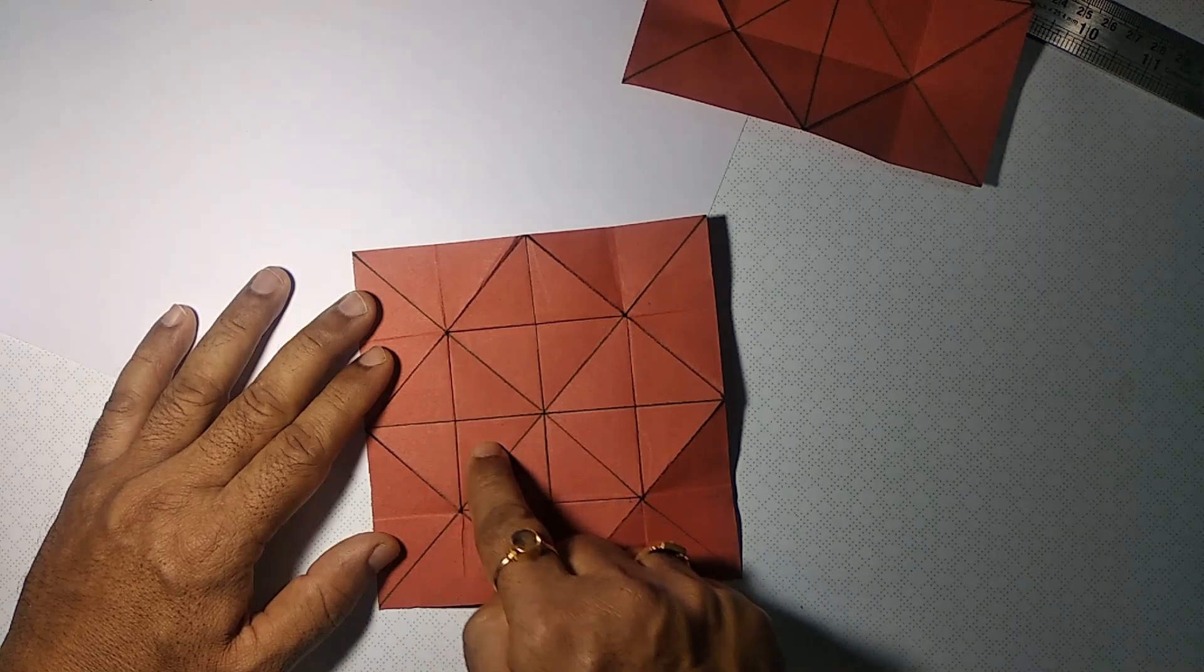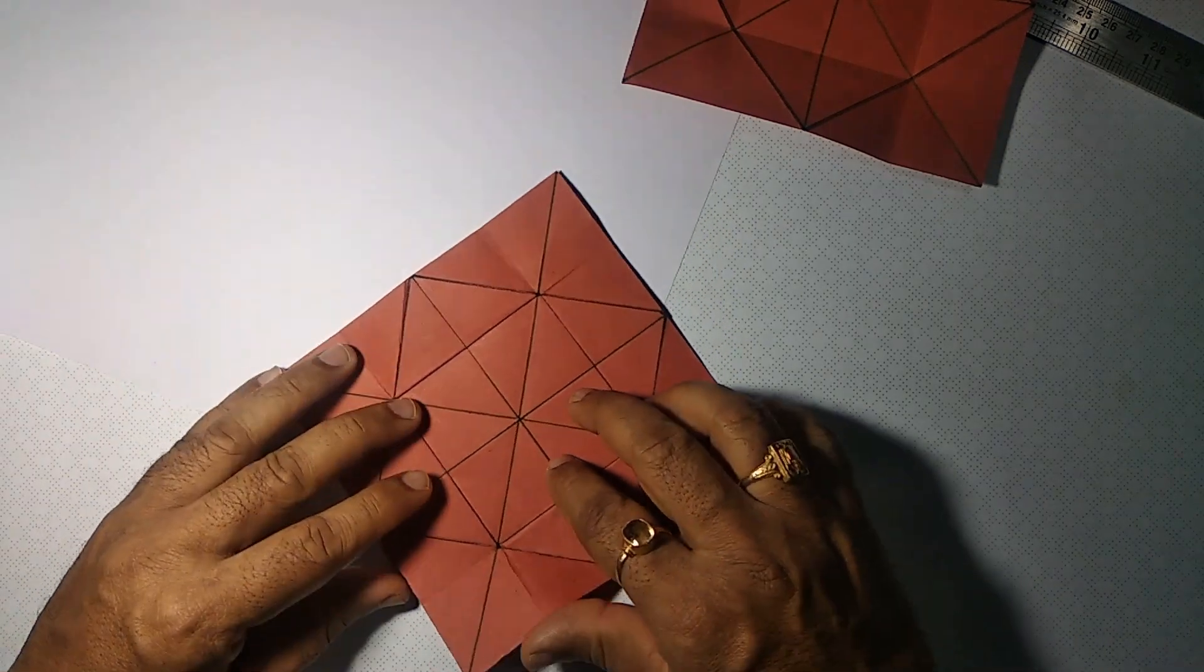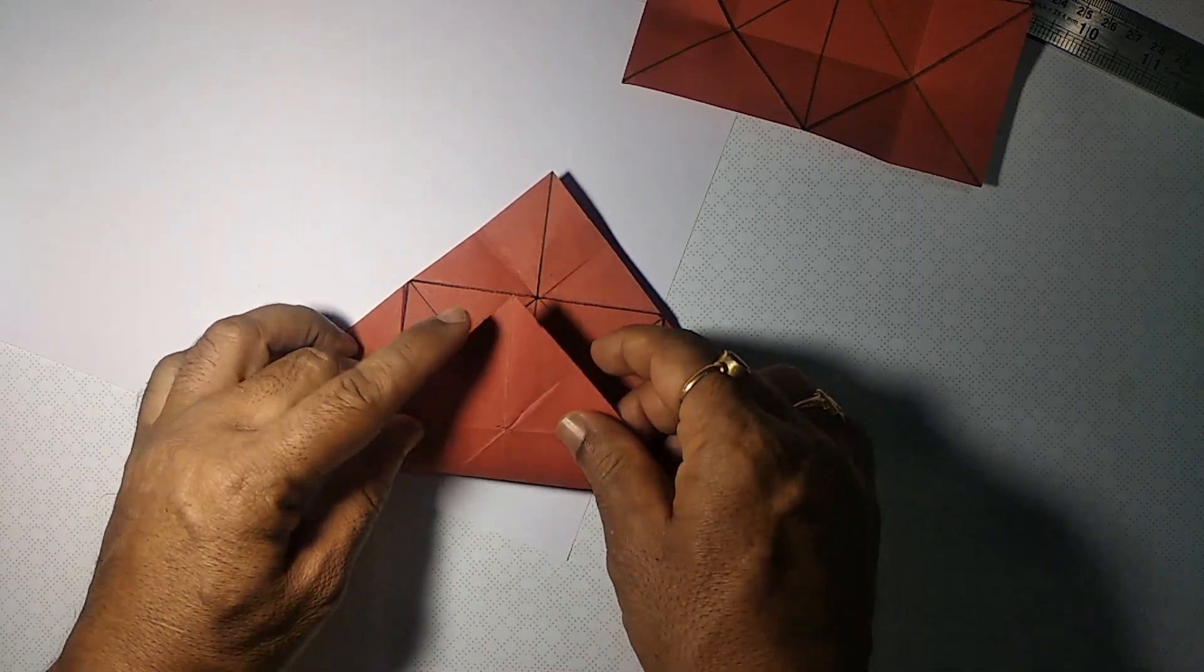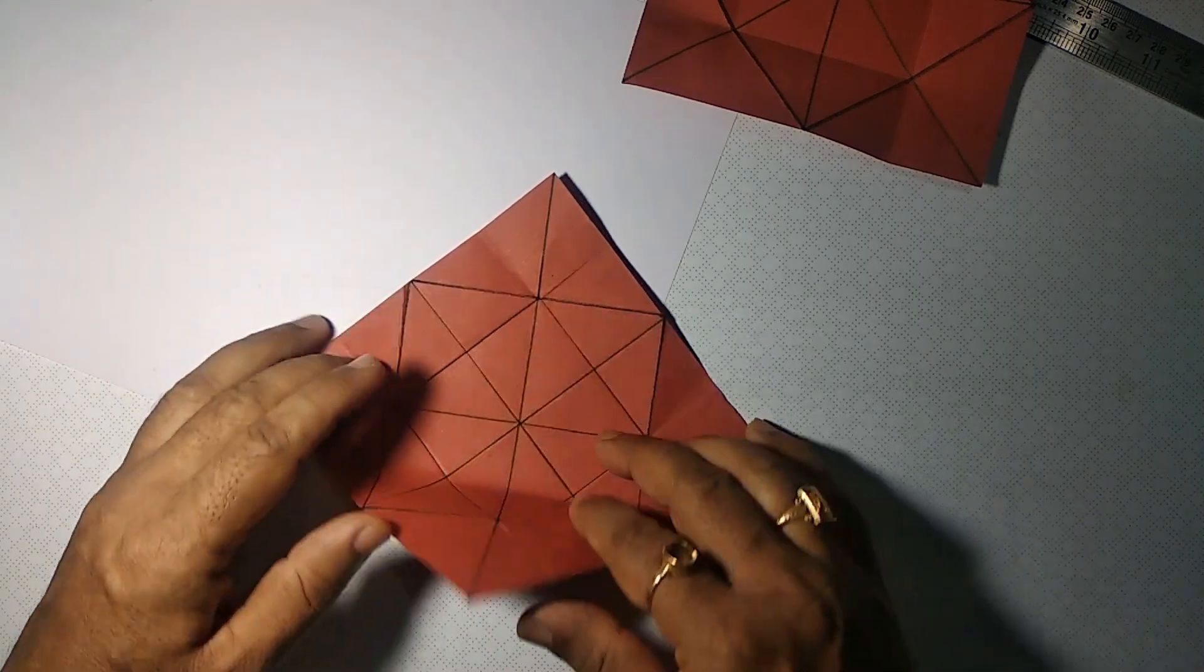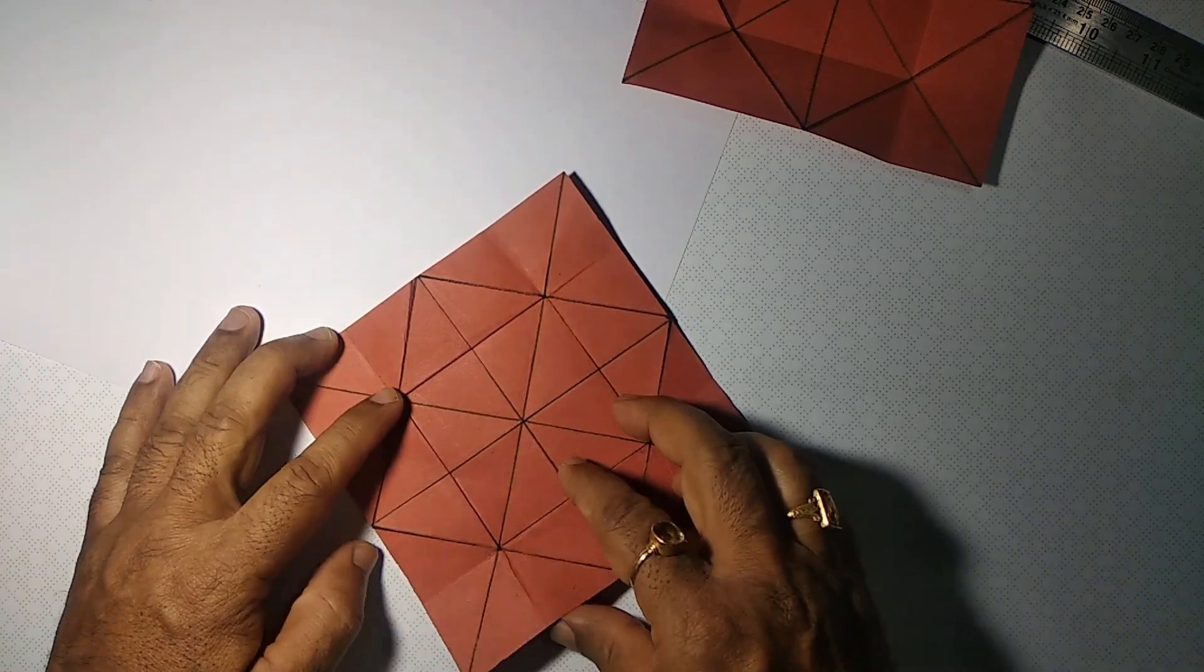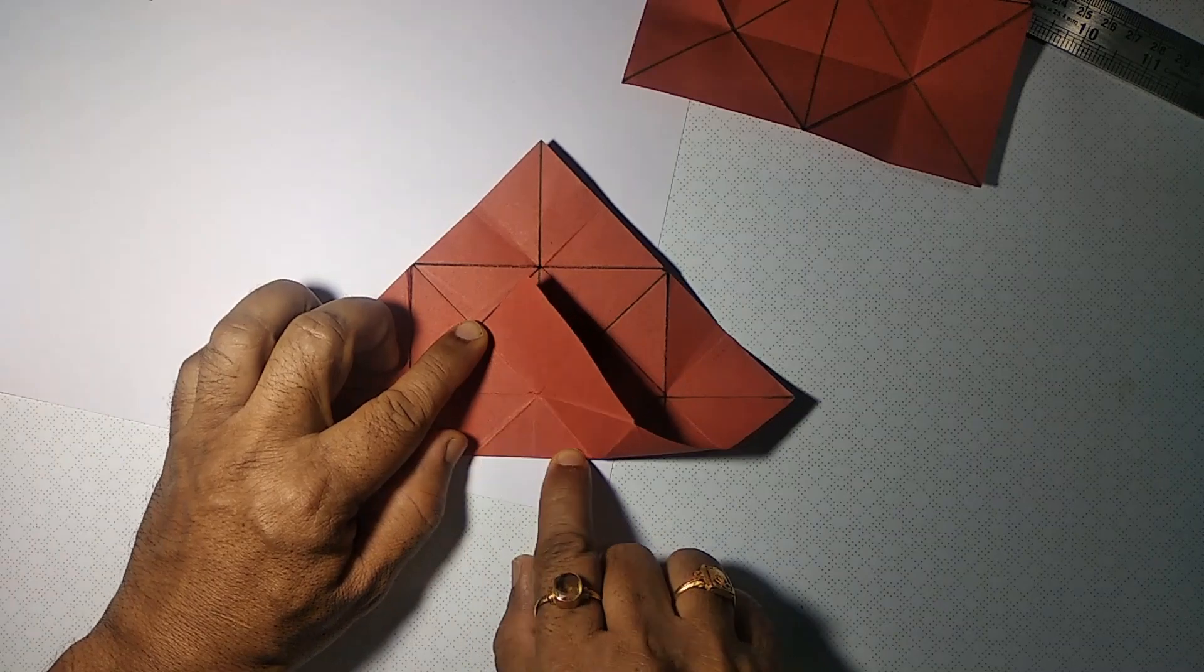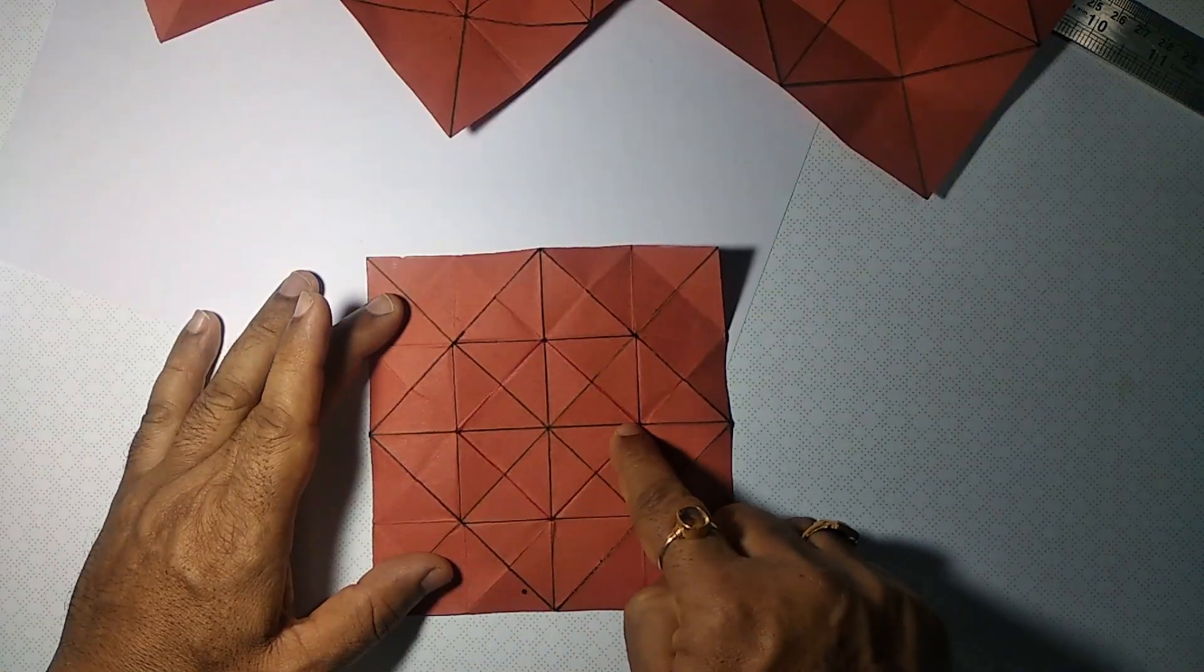Once again, identify the centers of the sides of the square just formed and try to crease it as shown. This is one side and this is the new square just formed, which is half of the next one.